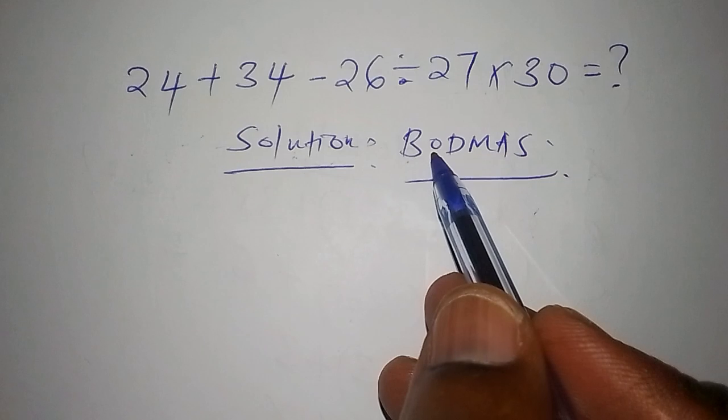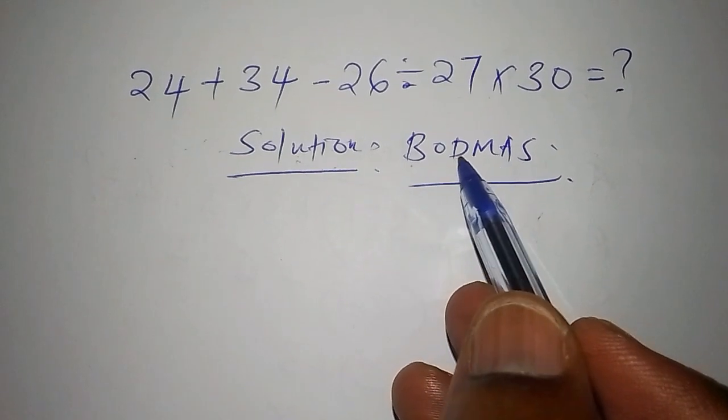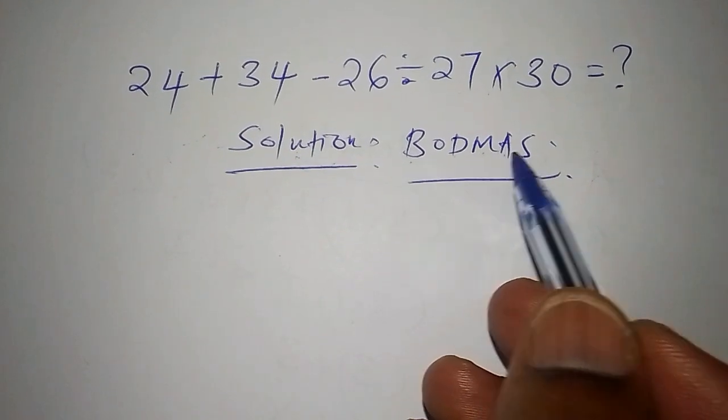So BODMAS in this case, B stands for bracket, O stands for of, division, multiplication, addition, and subtraction.